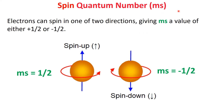Finally, we have the spin quantum number, ms. This number tells us the direction in which the electron spins. Electrons can spin in one of two directions — ms can be either plus one-half or minus one-half. This unique property allows each orbital to hold two electrons: one spinning up and the other spinning down.